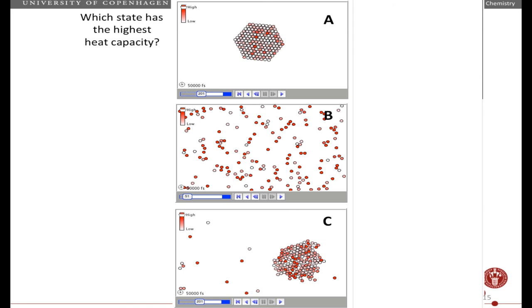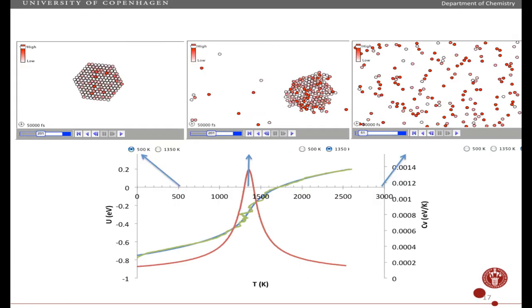The answer is C, because that is the state where it's not quite a solid, it's not quite a gas, it's somewhere in between, it's the part of the simulation where it's melting. So at lower temperatures, it's a solid. At higher temperatures, it's a gas. And right here, you have the transition from the solid state to the gas. So that's what we call the melting temperature.